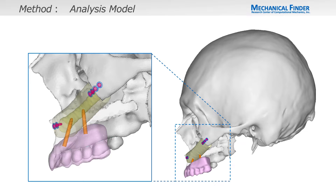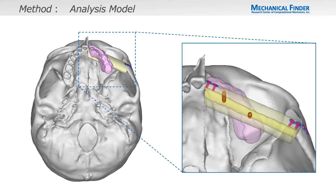The implant is inserted following the angle of the tooth. The implant placement sites are limited due to the arrangement of the fibula; therefore, overdentures are only fabricated up to the first molar.